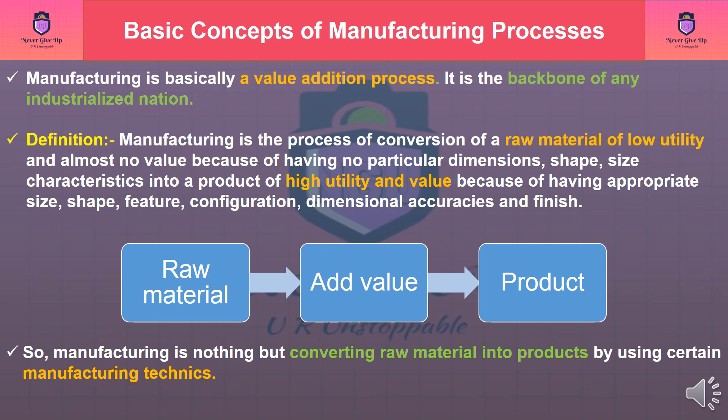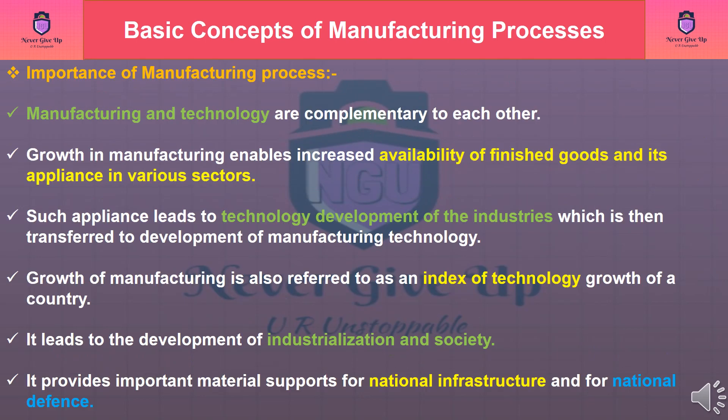Definition: Manufacturing is the process of conversion of the raw material of low utility and almost no value — because of having no particular dimensions, shape, size characteristics — into a product of high utility, quality, and value because of having appropriate size, shape, feature, configuration, dimensional accuracies, and finish. So, manufacturing is nothing but converting raw material into products by using certain manufacturing techniques.